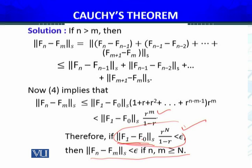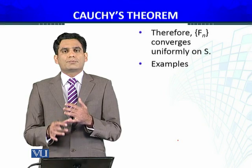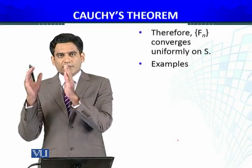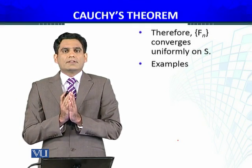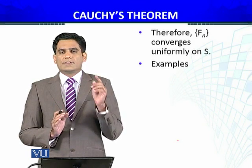Since f_1 minus f_0 and all these functions are bounded, their supremum over S is a finite real number. So we can determine capital N from the inequality, and we immediately conclude the Cauchy criterion is satisfied. Therefore, the sequence of functions defined recursively by f_n(x) = G(f_{n-1}(x)) — where G is differentiable with |G'(x)| ≤ R < 1 — converges uniformly on S, as proved by the Cauchy criterion for sequences of functions.